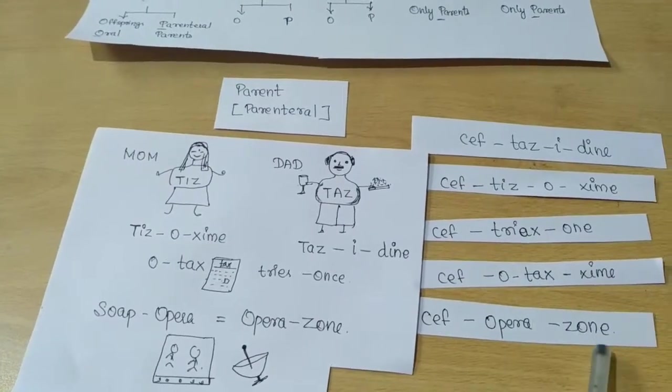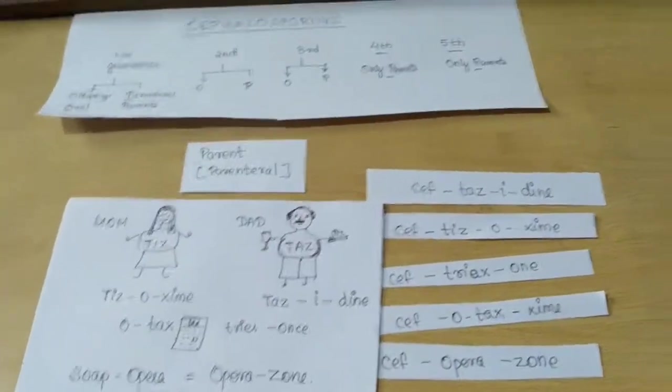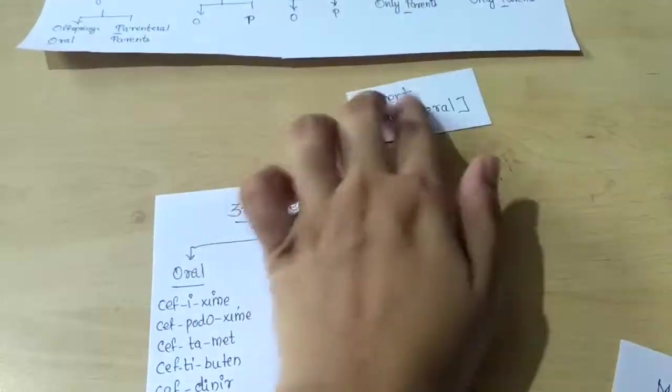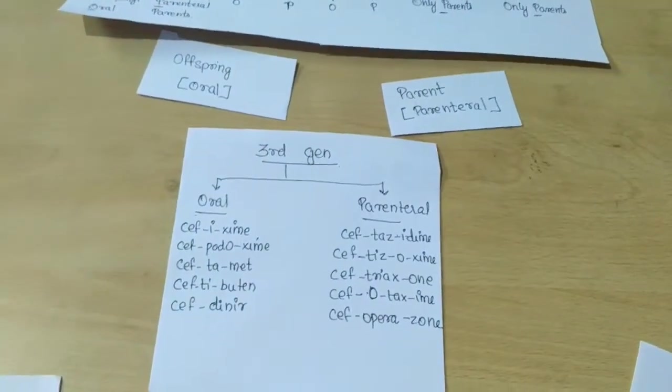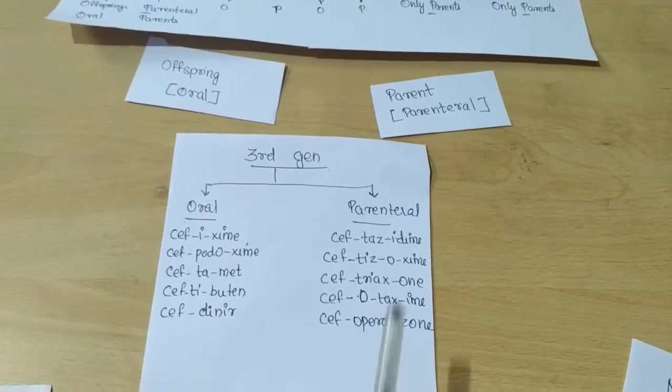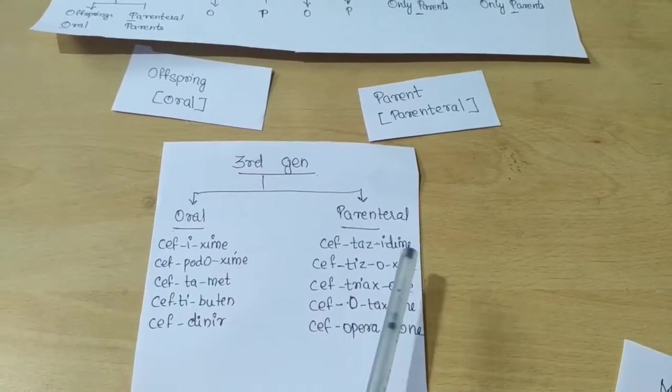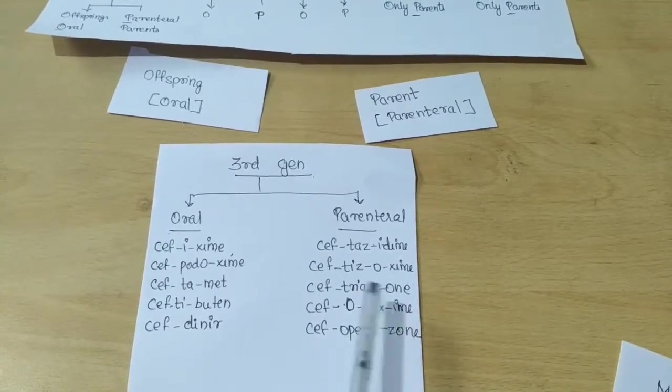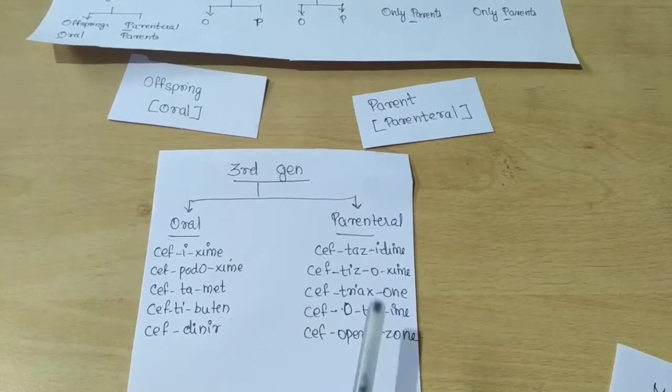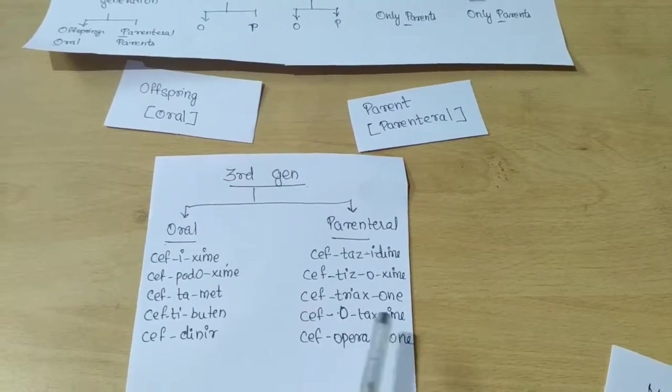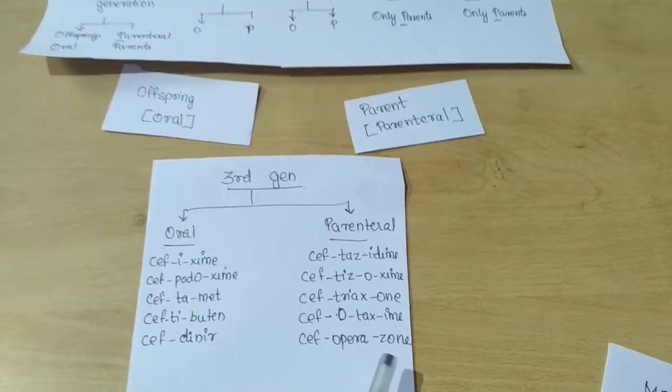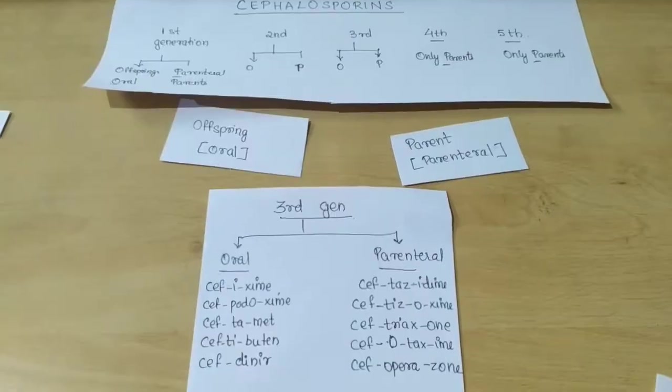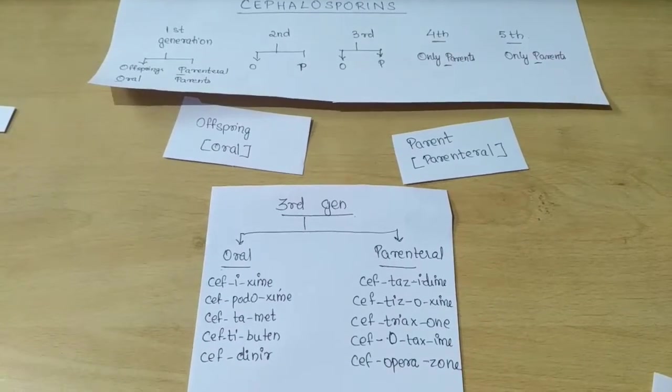So the drugs under the third generation parenteral are: Ceftizoxime from Tess Ozyme, Ceftriaxone from trying to fill the tax once, and Cefoperazone from opera zone.